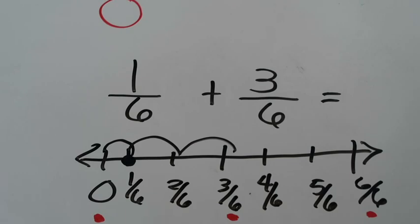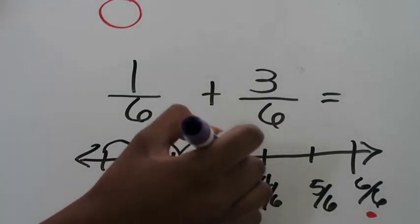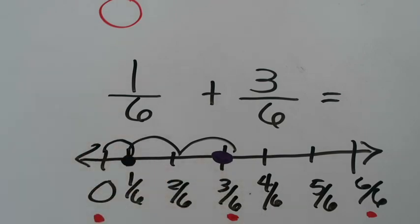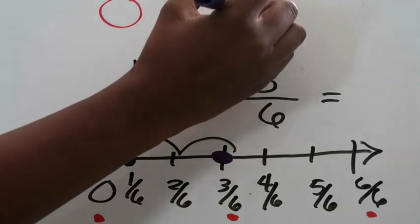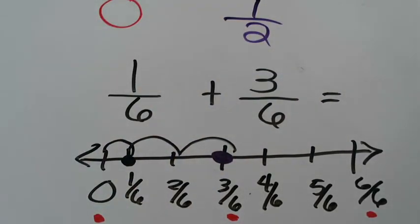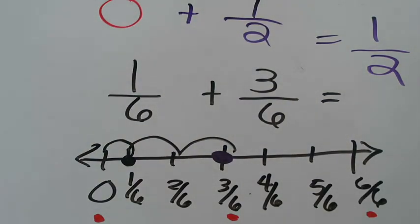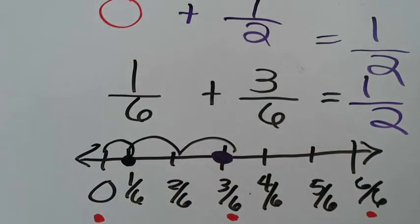Next, I'm going to do the same thing with three sixths, using a different colored marker so you can see the two fractions plotted on the number line. Three sixths is sitting right on one of my benchmarks — it's sitting right at the halfway mark. That tells me right away that three sixths is going to be rounded to one half. Once you've estimated your two fractions on the number line, you add your estimated fractions to come up with your estimated answer. Zero plus a half equals one half, so the estimated answer to one sixth plus three sixth is one half.